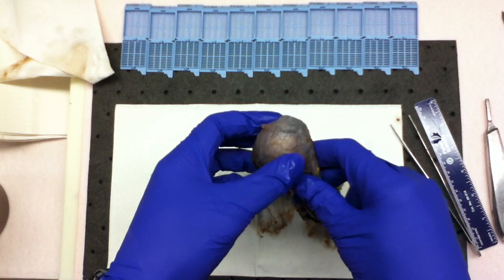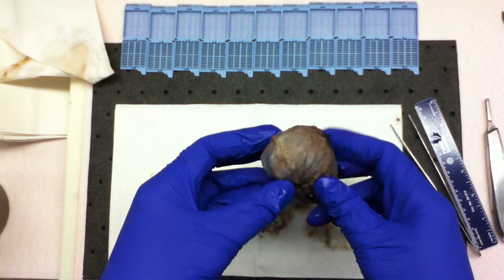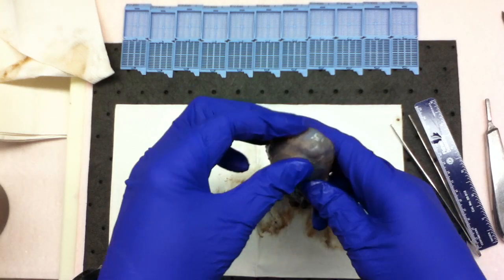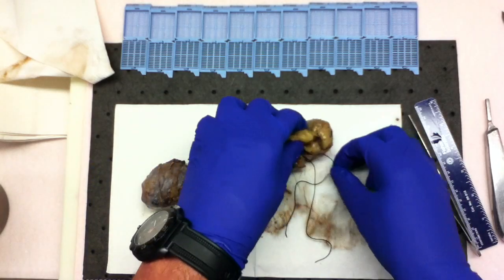The tunica vaginalis is tan pink to purple and intact. The tunica vaginalis is free-moving over the underlying testicle.